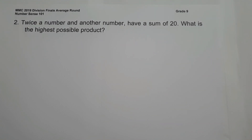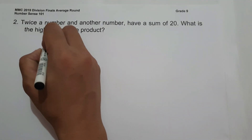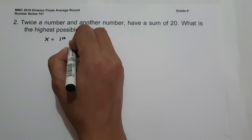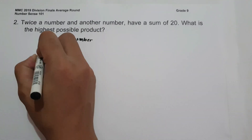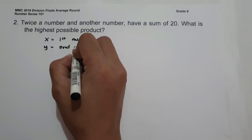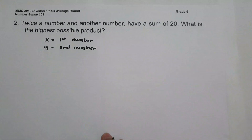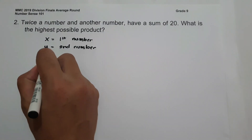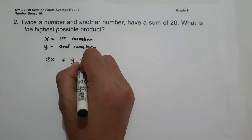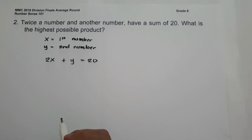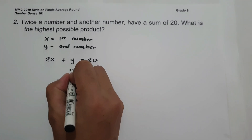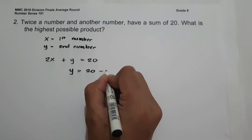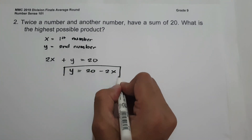On number 2, twice a number and another number have a sum of 20. What is the highest possible product? Let us represent x as the first number. From the statement, 2x plus y equals 20. Isolating y, we get y equals 20 minus 2x. This will be the value of the second number.